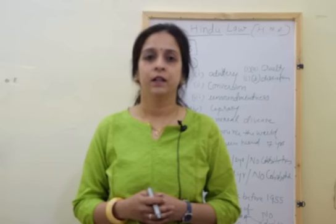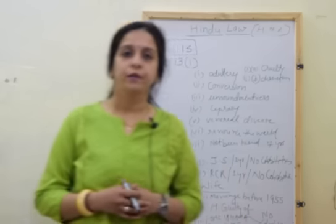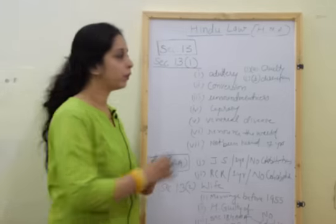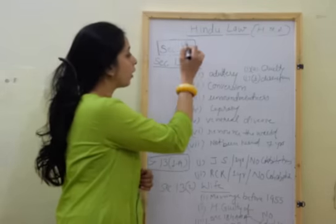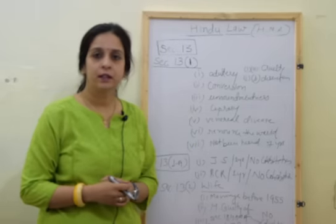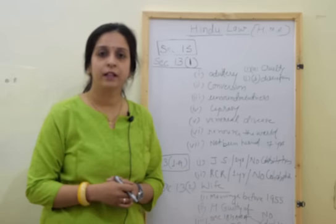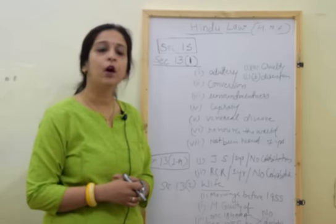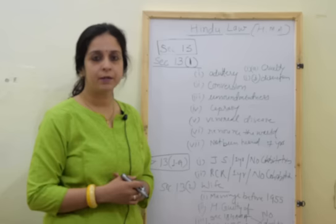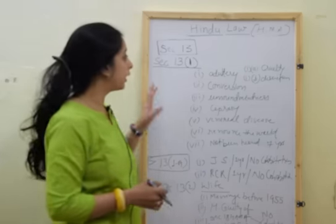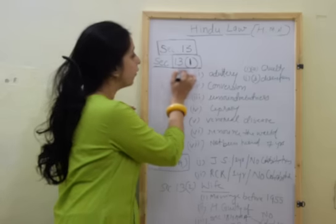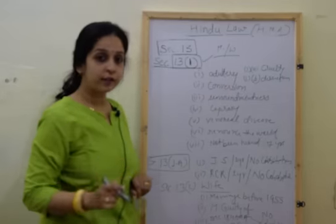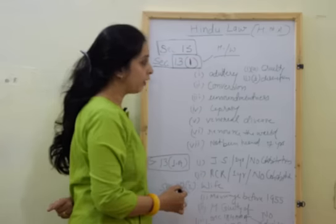These are the grounds for divorce under Section 13. Section 13, clause 1 is talking about how either of the parties may file a petition on any of the grounds given below to the district court, family court, or city civil court. The grounds which are given under Section 13(1) are available to both the parties — husband or wife can file a petition for divorce on any of these grounds.